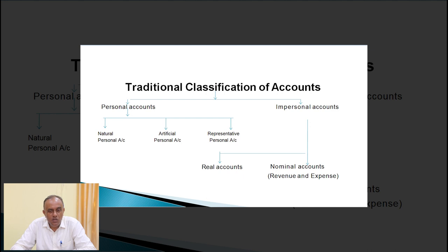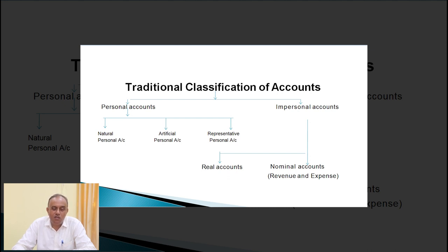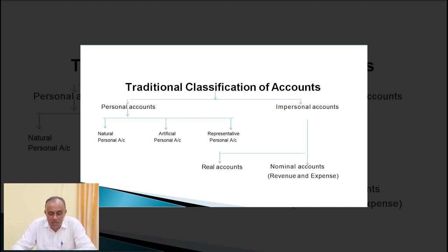As per the traditional approach, also known as the English approach, accounts are two types: personal and impersonal. Personal means relating to any person — natural, artificial, or representative. Impersonal accounts are two types: real and nominal. Real accounts relate to property, assets, and things such as land, building, plant, machinery, furniture, goodwill, patent, and copyright. Nominal accounts relate to expenses or losses and incomes or gains — such as sales, purchase, salaries, rent, commission, and interest.